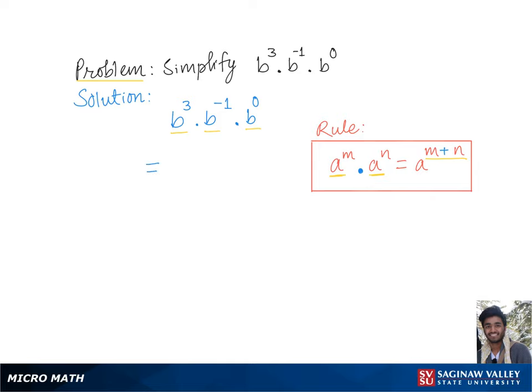To simplify this, we'll keep the base b and add the exponents together which is 3 plus negative 1 plus 0, which is equal to b to the 3 minus 1 plus 0, which gives us the final simplified form b squared.